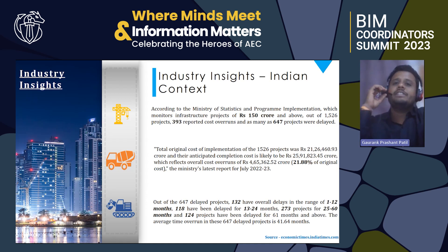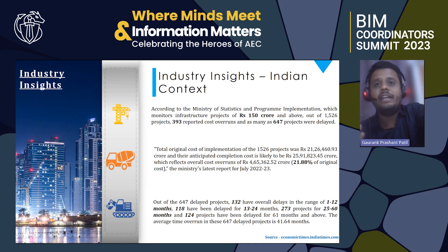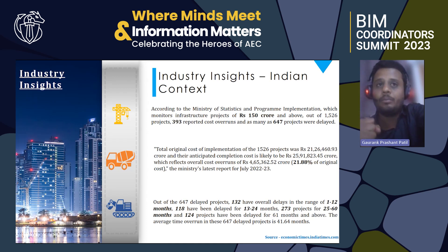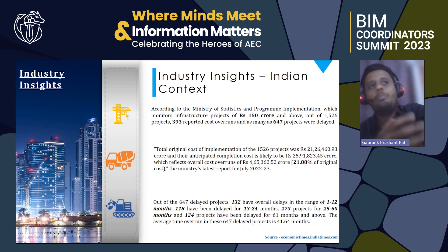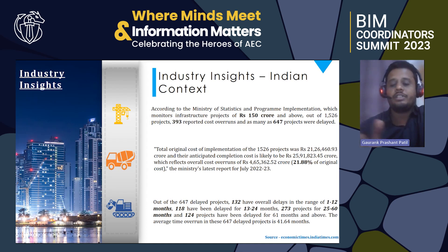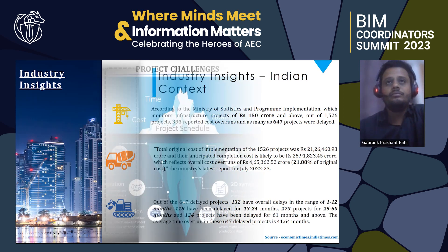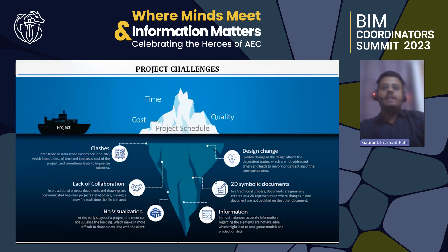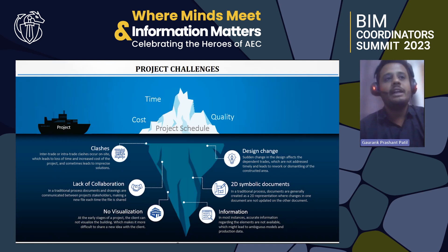The total cost of implementation for 1,526 projects was 21.26 lakh crore, but the Ministry of Statistics and Programme states that 25.9 lakh crores is now required for the same quantum of work. So 4.65 lakh crore is the additional cost incurred — representing 21.88 percent of the original cost. This tells us there is a requirement for a proper common coordination process, more technical digital record traces, and a smooth flow of construction process with a strategy to execute these projects.